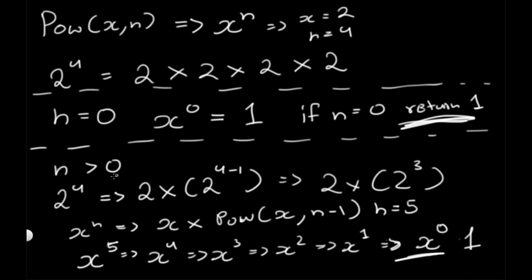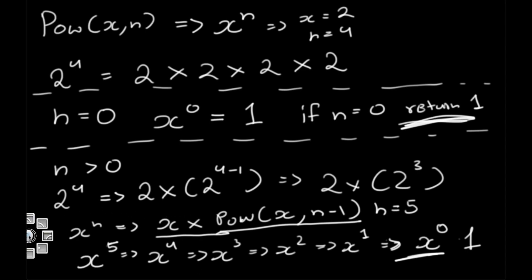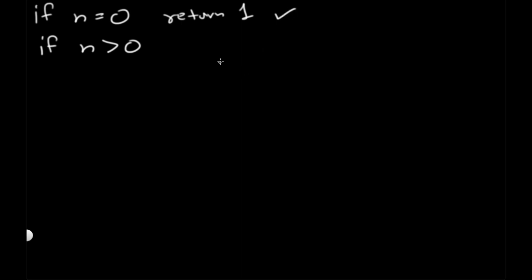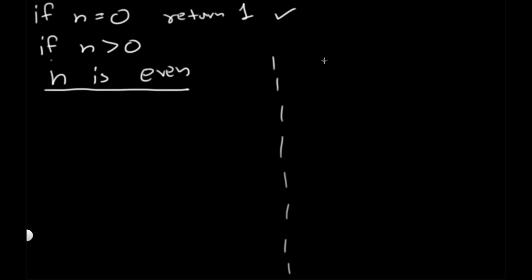We could use this method for everything where n is greater than 0, but there is a better and more optimized method. When n is greater than 0, we can split it into two parts: one case where n is even, and another case where n is odd.